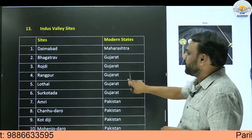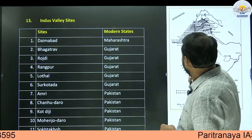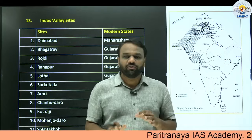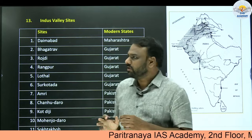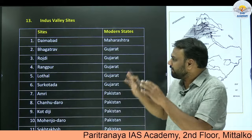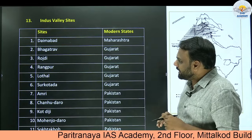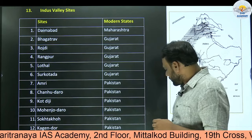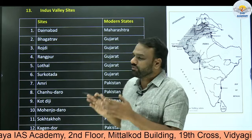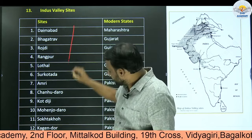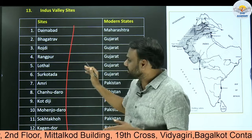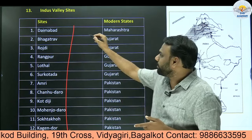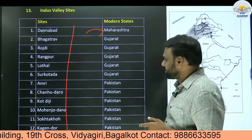The next important part is Indus Valley sites. The information given in the book would not be sufficient from a UPSC perspective. Looking at previous year papers, there is a clear indicator that whenever an ancient site appears, we need to know about its modern state. Questions might also be framed like: 'Which of the following are Indus Valley sites?' So we need to know this list and where these places are present.